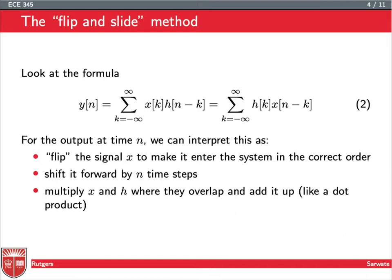Let's take a look at this formula for the convolution. We have y[n] is either equal to the sum of x[k]h[n-k] or the sum of h[k]x[n-k]. Because the convolution is commutative, we can write down this thing either way. For the output at time n, we could interpret this as taking the signal x and flipping it to make it enter the system in the correct order.